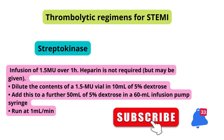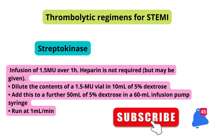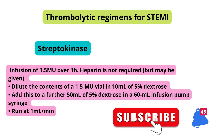Streptokinase: infusion of 1.5 million units over 1 hour. Heparin is not required but may be given. Dilute the contents of a 1.5 million unit vial in 10 ml of 5% dextrose, then add this to a further 50 ml of 5% dextrose in a 60 ml infusion pump syringe. Run at 1 ml/minute.